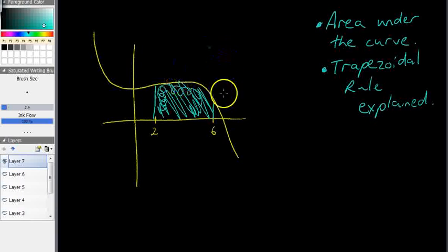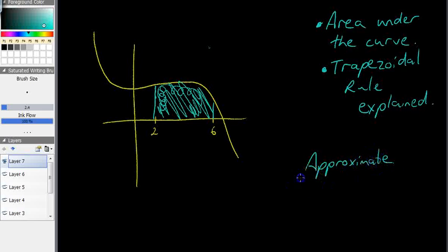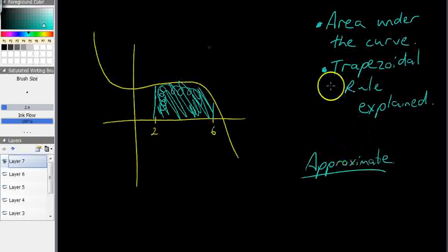I'm going to do something that allows you to approximate the area under the curve. It doesn't give you an exact value — it approximates it. It's called the trapezoidal rule.